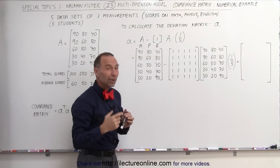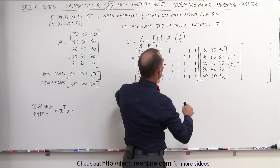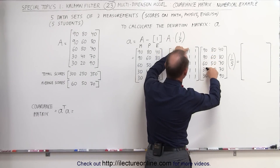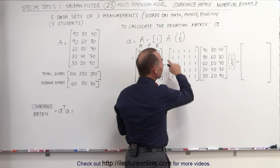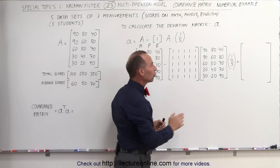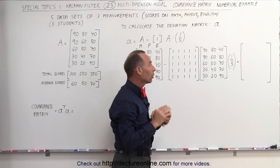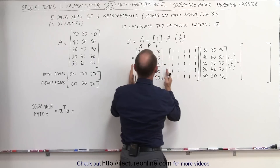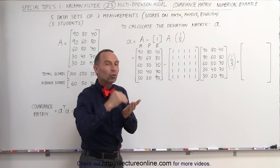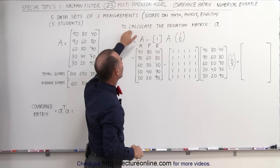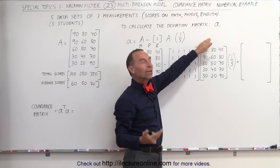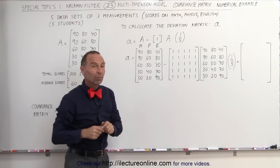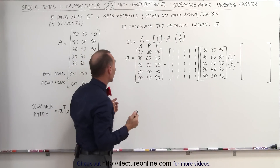Why do we do that? When we multiply the unity matrix times the score matrix, we multiply each row by each column and add them together, giving us the total scores. We then multiply the total scores times one-fifth, which gives us the average score. So what we get is the average score, and then we're subtracting the average score from the initial matrix to give us the difference between the scores and the mean. That's called the deviation matrix, denoted by small 'a'.